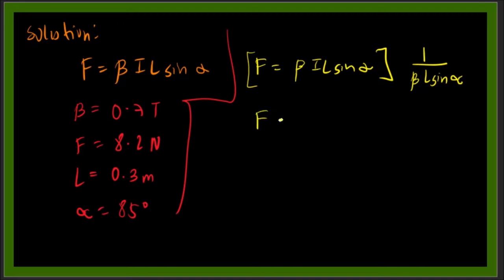So we have F over β L sine α equals I. We need now to solve for I, so just reverse the equation.